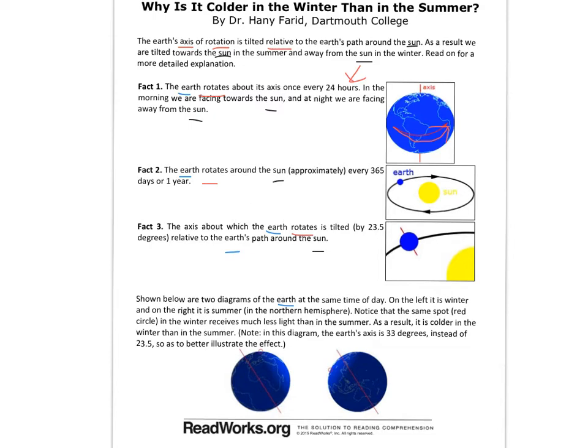Then when we look at the bottom pictures, we can see the earth at different positions, and you can see the axis line. Again, the axis is not directly in the center. From looking at the title, looking at the pictures, looking at the words in the pictures, we have a pretty good idea that this is going to talk about maybe the scientific idea around how our seasons are formed.